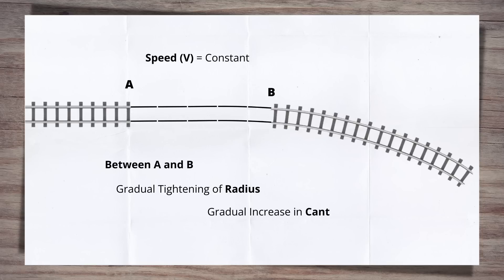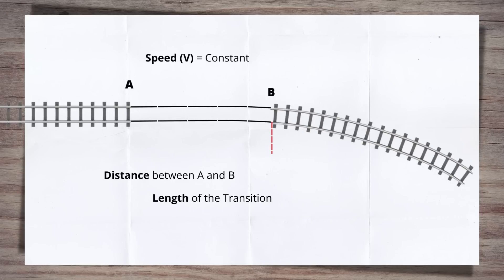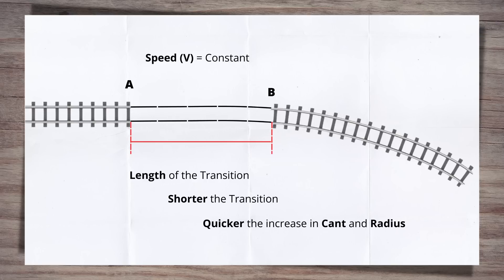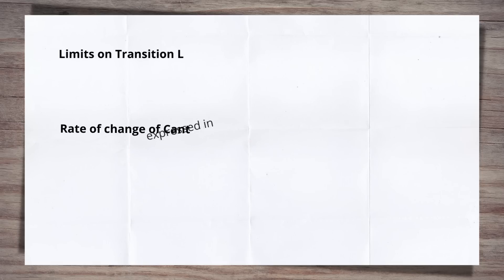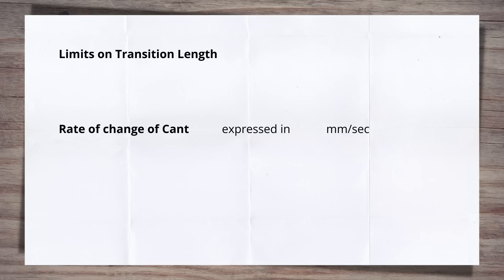But what governs how fast the cant can be increased? Introduced too quickly and it would be no better for trains and their passengers than an instant change. This is the length of the transition. The shorter the transition, the quicker the radius and the cant have to change. The length of the transition is ultimately governed by the increase in cant for passenger comfort. This is through the rate at which it changes, expressed in millimetres per second. The UK railway standards put a limit on the rate of change of cant, as well as the rate of change of cant deficiency.